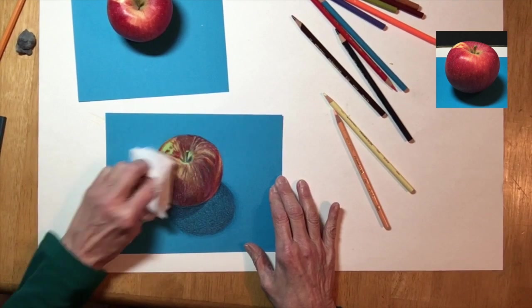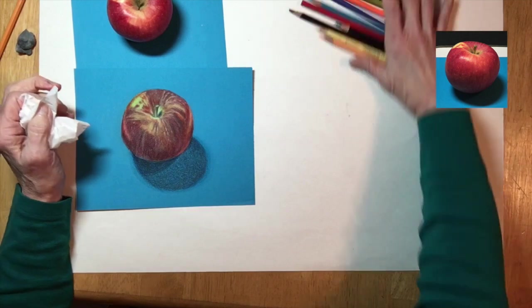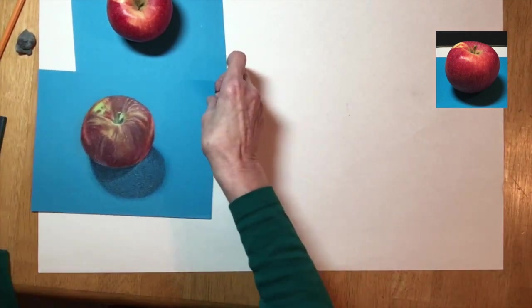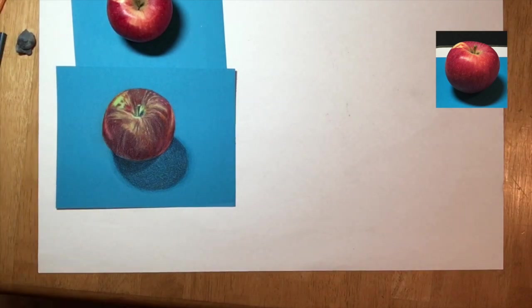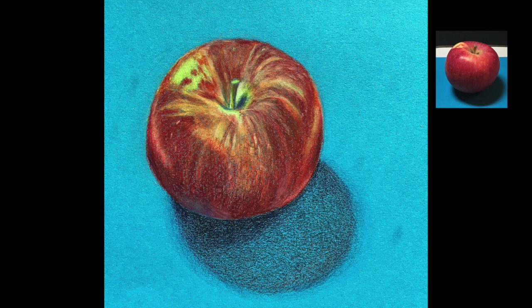I'm just about at the end, and I'm going to rub this again with the tissue. You don't want to rub so hard that you take off color, but you want to rub so that you get that bloom off. Here's the final drawing. Good luck with yours.